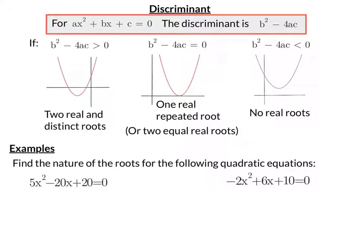In this video we're going to look at the discriminant of a quadratic equation. The discriminant is calculated by doing b squared minus 4ac, and if it's greater than 0 then you have two real and distinct roots, where it crosses the x-axis twice.